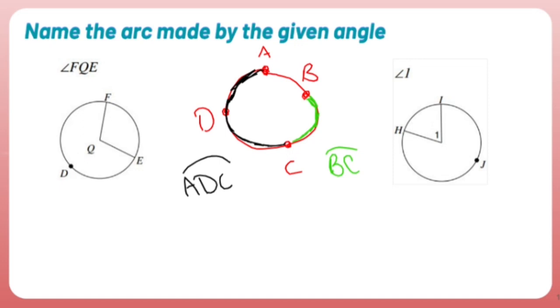When I'm looking at this one, the name of the arc made by the angle FQE, here's F, here's Q, here's E. I have three dots on my circle, but I'm going straight from F to E. So there's two names for this one. I can either call it FE, or EF. I'm not including D because I'm only going in this short route to get from F to E. I'm not including the whole circle over here.